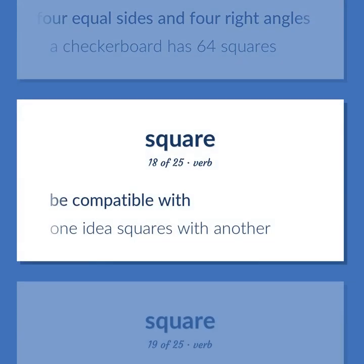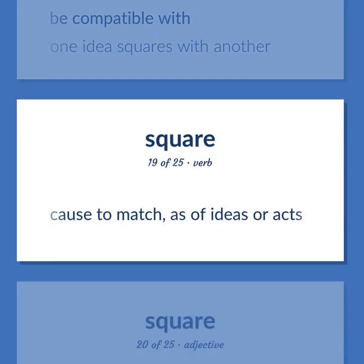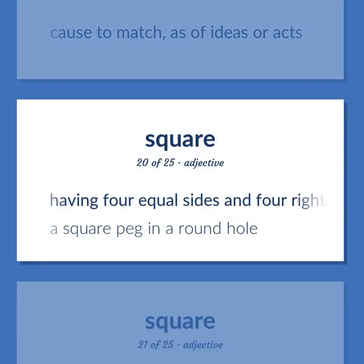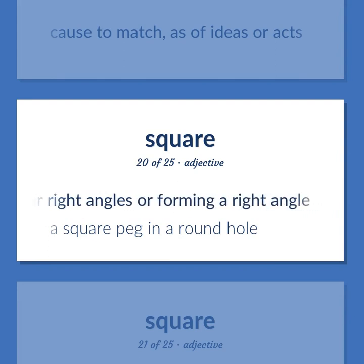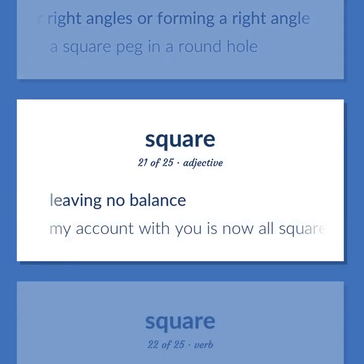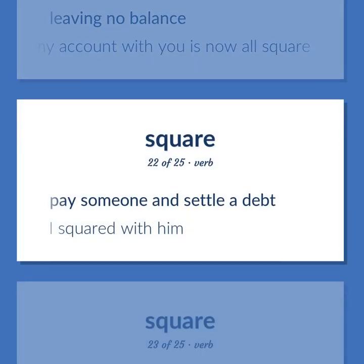Square: be compatible with — one idea squares with another. Cause to match, as of ideas or acts. Having four equal sides and four right angles, or forming a right angle — a square peg in a round hole. Leaving no balance — my account with you is now all square. Pay someone and settle a debt — I squared with him.